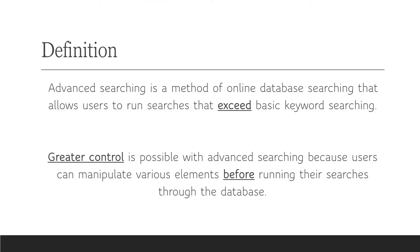Advanced searching is a method of online database searching that allows users to run searches that exceed basic keyword searching. Greater control is possible with advanced searching because users can manipulate various elements before running their searches through the database. Advanced search interfaces can be found on many popular websites and academic databases.